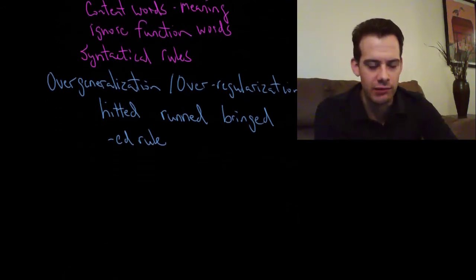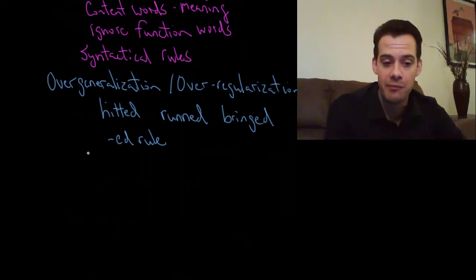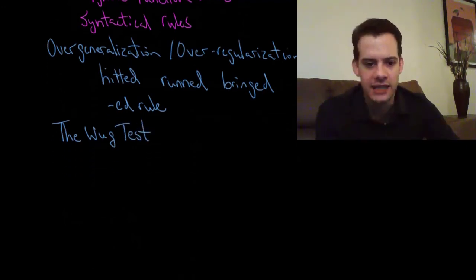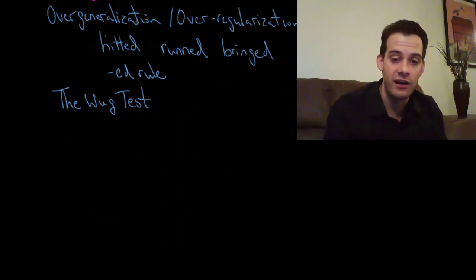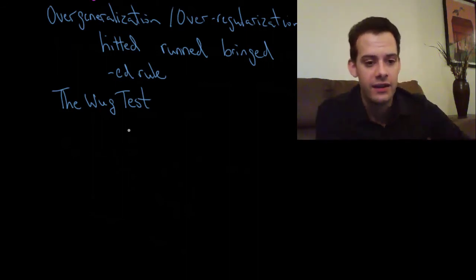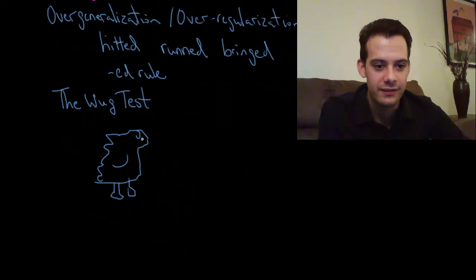Okay so another way that we can see this overgeneralization which actually demonstrates that even though they're making a mistake it shows that they actually know the grammatical rule, we see this in what's called the WUG test. This was created by Jean Berko Gleason. And the WUG test is that you introduce something that the child has not seen before and you introduce a word that the child has not heard before. So this eliminates the possibility that prior conditioning or prior exposure is influencing what the child is going to say. So we'll make some creature here. This is a WUG we'll say.